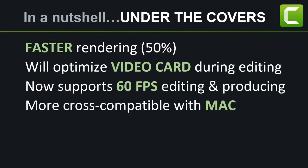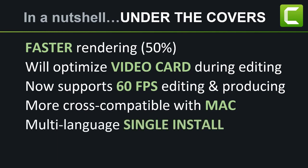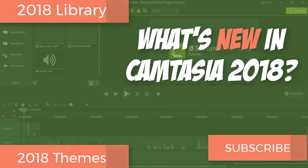The Mac version now has a library, and assets can be imported and exported between 2018 versions, as can recording files and project files. There is also a new multi-language install. When you go to install 2018, you'll have the option to choose which language version you want to install, as opposed to having to download a Spanish version or a German version separately. In the next video, we'll start getting into the user interface stuff and take a look at the new Camtasia library. Thanks and I'll see you then.